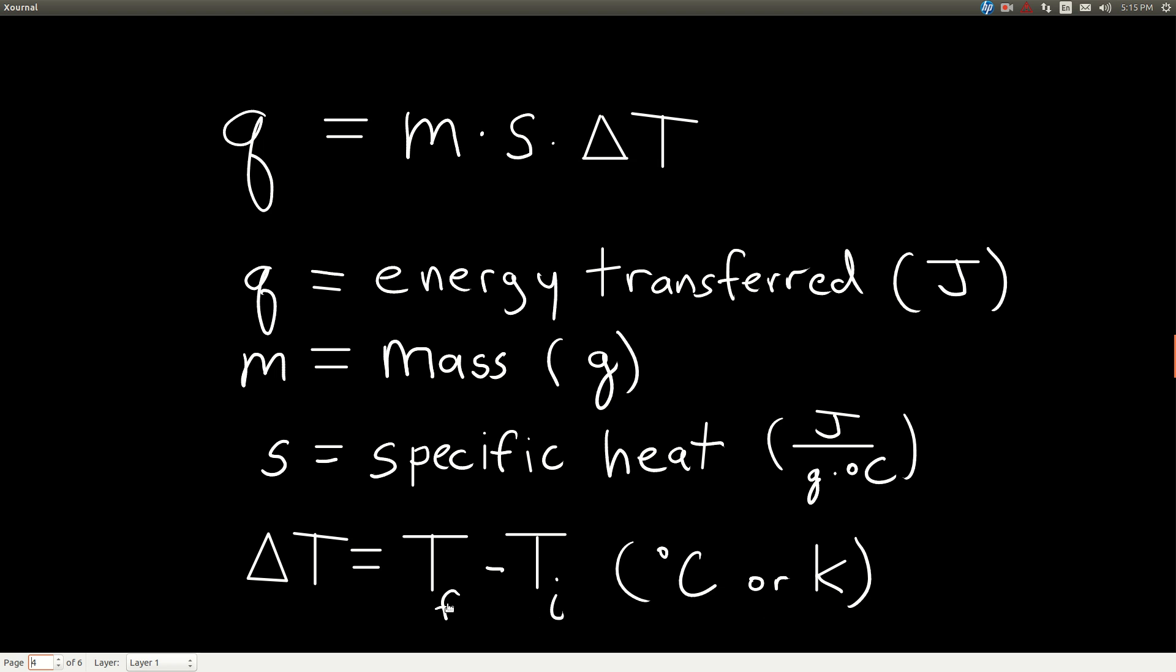The final temperature can be higher than the initial temperature, in which case something is being heated up. Or it can be lower than the initial temperature. If T final is lower than T initial, that means that the object is being cooled. The mass has to be positive. Specific heat capacity always has to be positive. But our delta T can be negative or positive depending upon the size of the final temperature relative to the initial temperature.